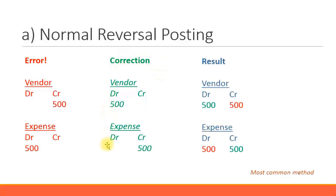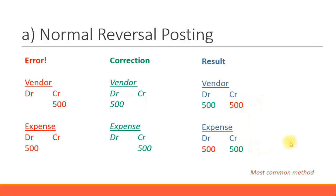This is what the system will do during the reversal posting. The offsetting result is: the $500 in red was the original posting, and the green one was the reversal transaction. So the offset amount is zero — that is the final result. Once again, if your original posting was credit $500 for vendor and debit $500 for expenses, then when you do a reversal, the system will do the opposite postings, and the offsetting result will be zero for both the vendor and expense line items.